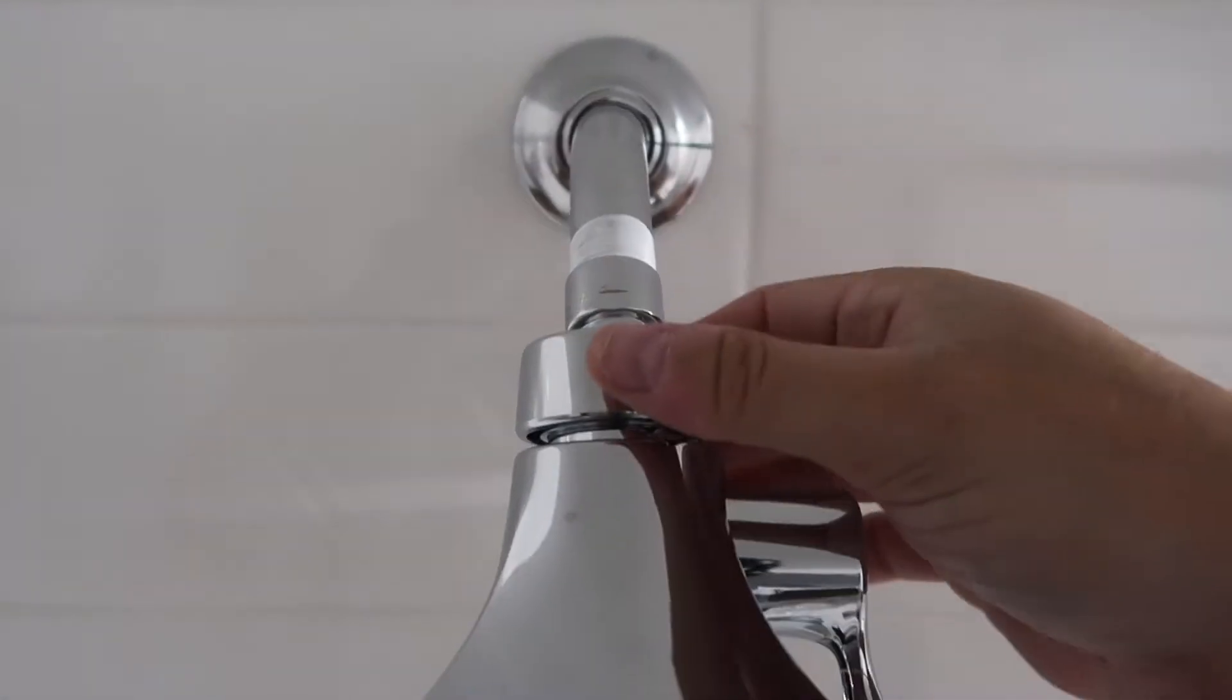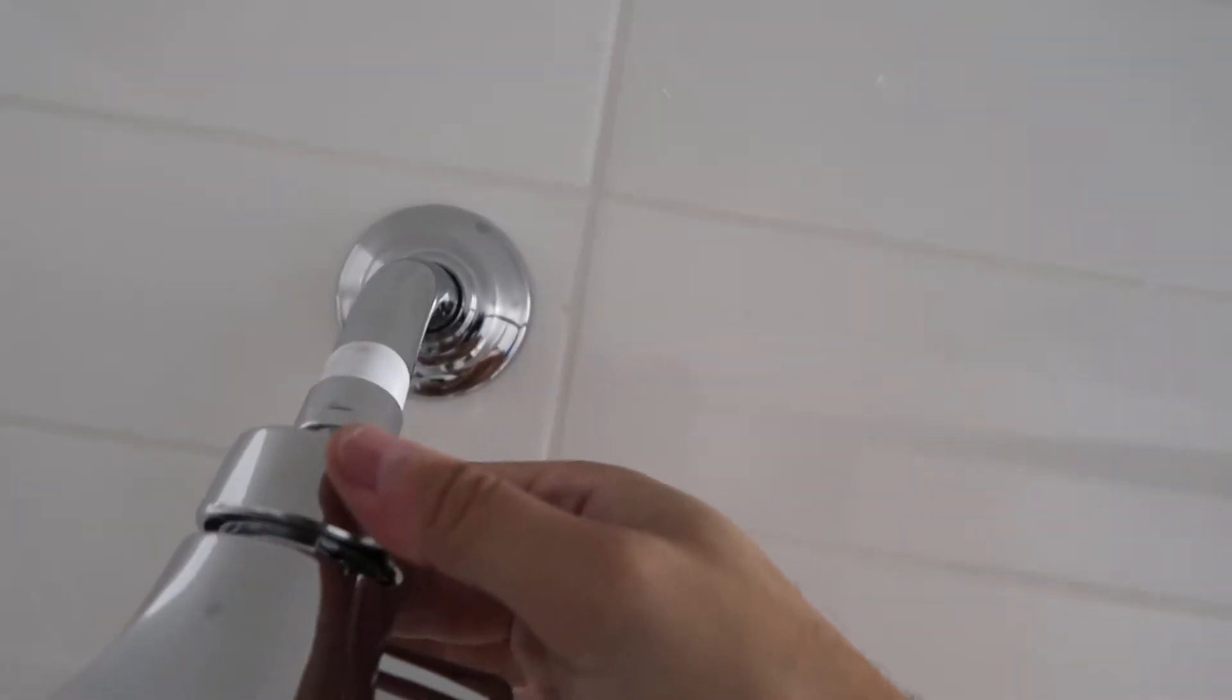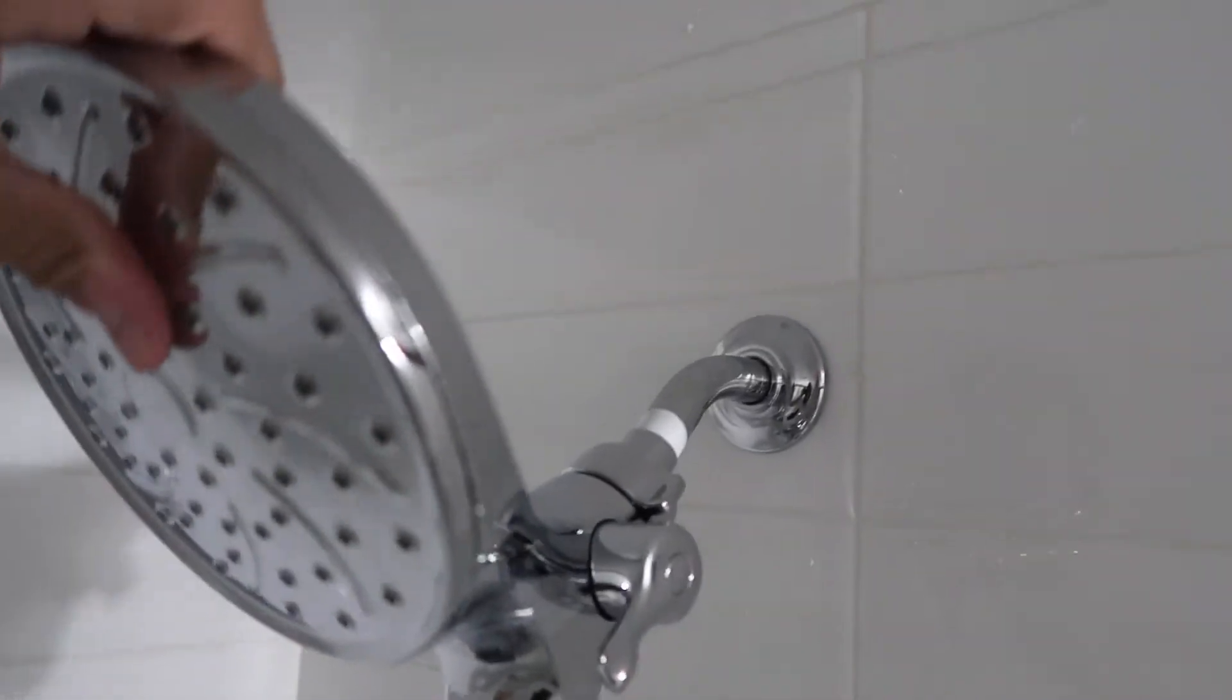Once that's tightened, you want to tighten this one here, just hand tighten. That basically allows you to have sturdiness so that way you can adjust this how you like. Next step is grab your hose.